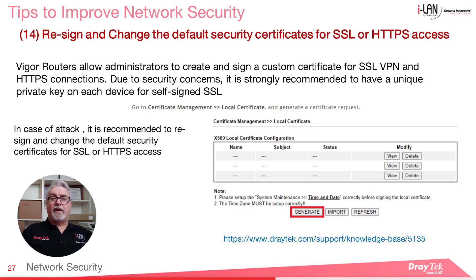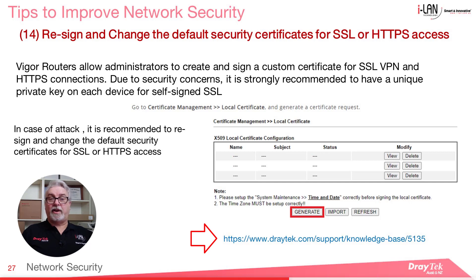Security Certificates: Vigor routers allow administrators to create and sign a custom security certificate for SSL VPN and HTTPS connections. Due to security concerns, it's strongly recommended to have a unique private key on each device for self-signed SSL. A recommended practice in the event of an attack is to re-sign and change the default security certificates, just in case they were compromised. More details on how to generate a customized self-signed certificate and replace the default one on Vigor routers is covered in Knowledge Base Article 5.1.3.5 — I'll include that link in the description below.